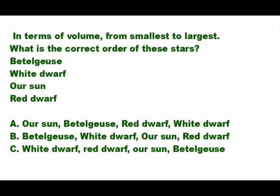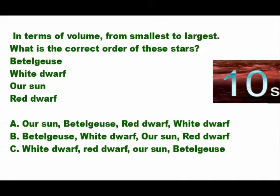Let's get started. This is my first question: in terms of volume, from smallest to largest, what is the correct order of these stars? A) Betelgeuse, white dwarf, our Sun, red dwarf; B) Betelgeuse, white dwarf, our Sun, red dwarf; or C) white dwarf, red dwarf, our Sun, and Betelgeuse. You have ten seconds.